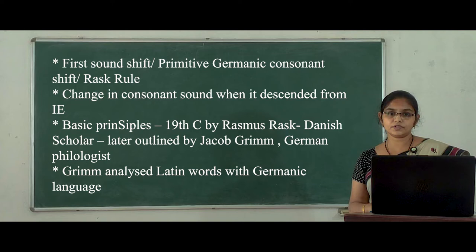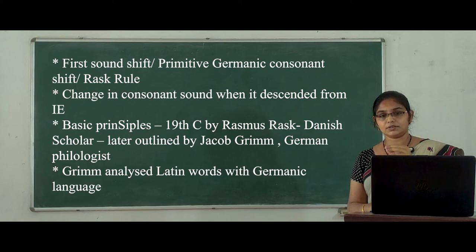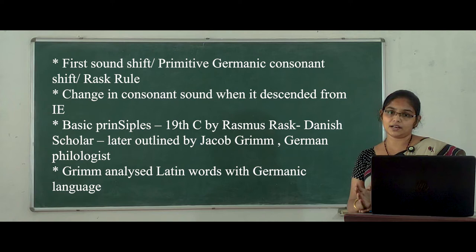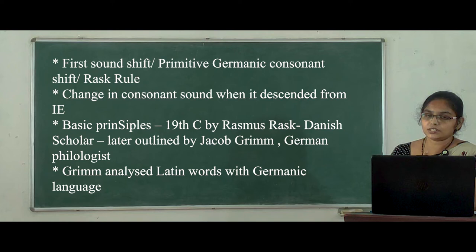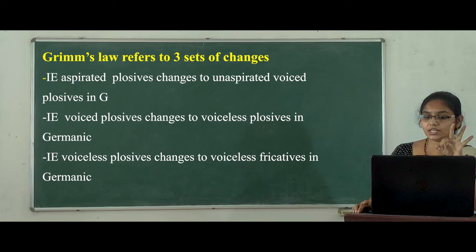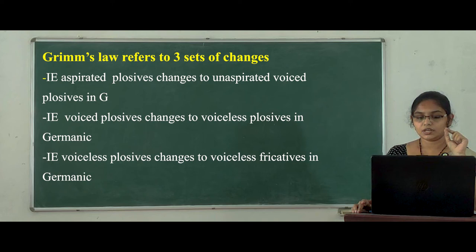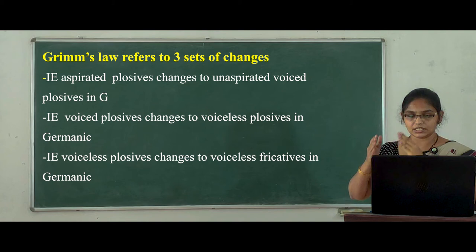Grimm's Law refers to the changes in the Indo-European plosive consonants that occurred when the Germanic language broke out from the parent language. Grimm's Law refers to three sets of changes. The first change: Indo-European aspirated plosives change to unaspirated voiced plosives in Germanic.